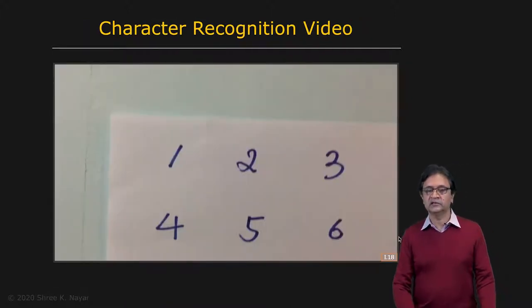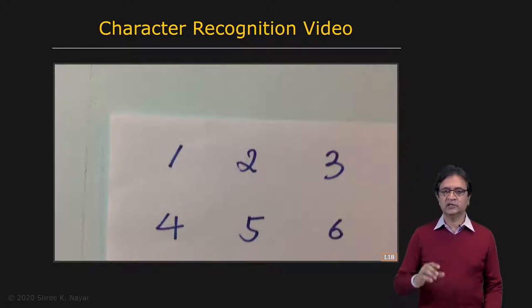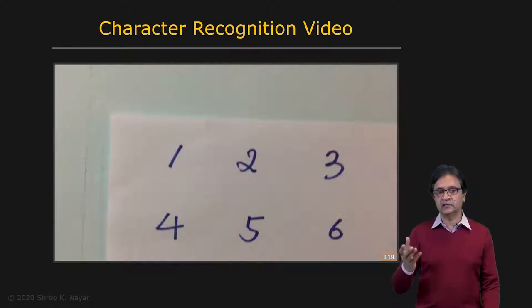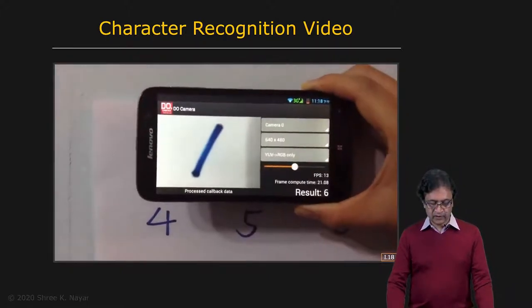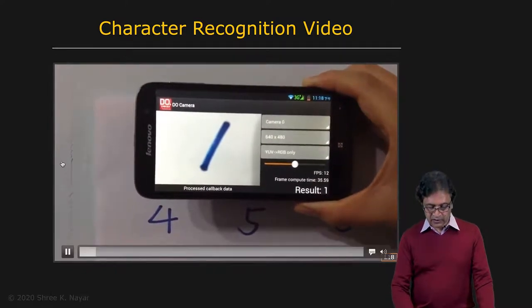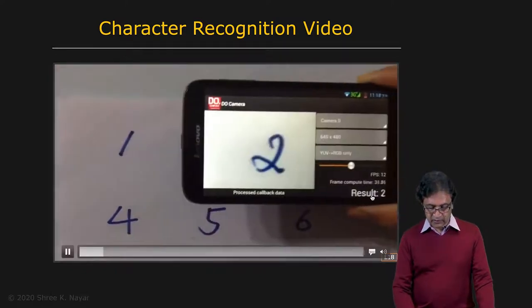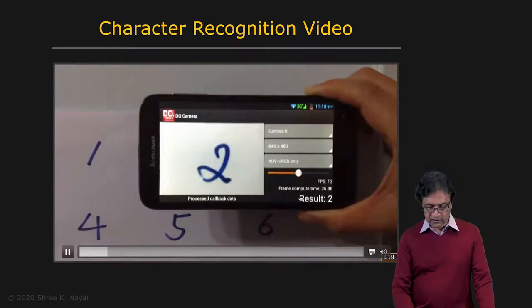So it works pretty well. And here's a real time implementation of this, which is done on a phone. Essentially open the camera of the phone and point it towards the character and the app tells you what the digit is that is handwritten. So you see that working here. You see that on the bottom right corner is the result. Keep an eye on the bottom right corner right here. It tells you it's a two.